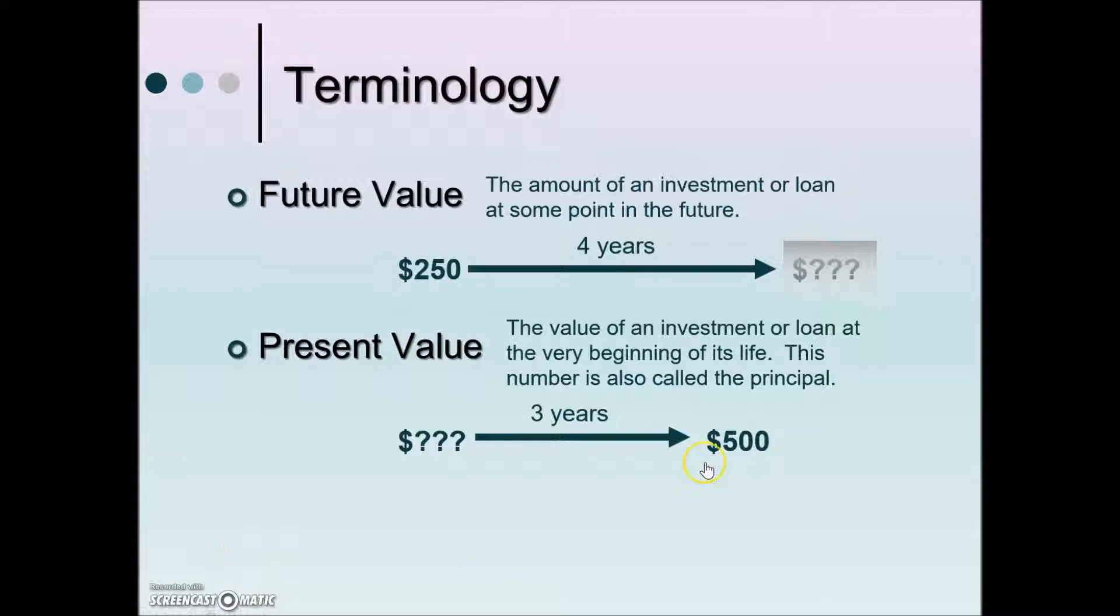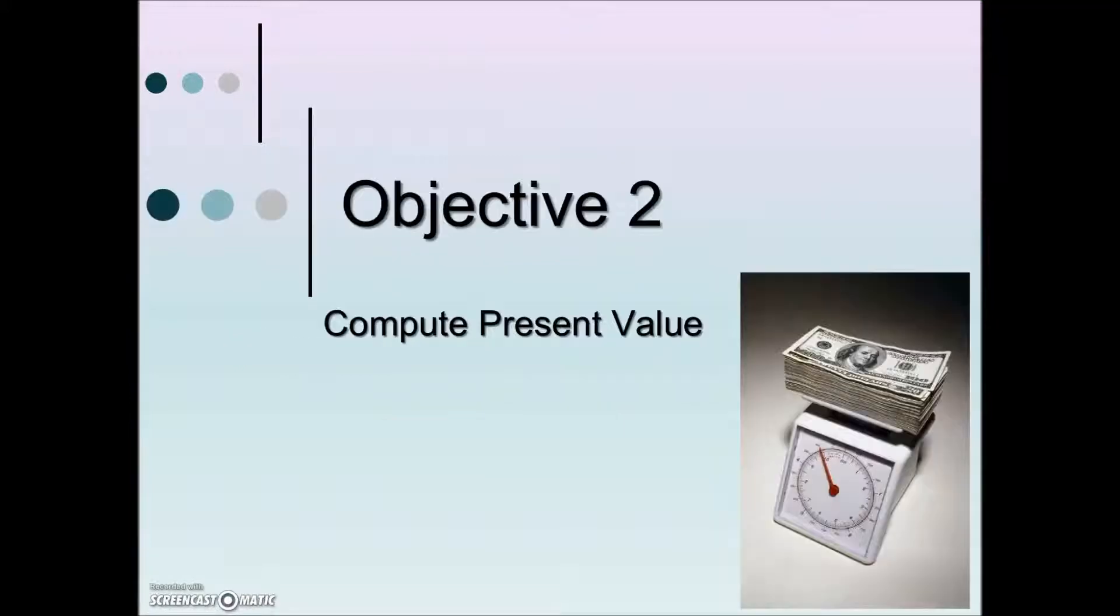We may have a goal in this example of attaining $500 in a period of three years. What do we need today with the terms and conditions to make that a reality? That's the types of problems that we'll be looking at in this section.